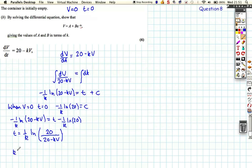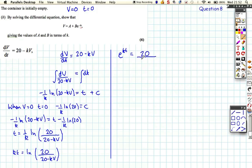So t is equal to 1 over k ln(20 over 20 minus kV). Multiply both sides by k, we get kt is ln(20 over 20 minus kV). So we can now take, if we move back up to the top here, if we take exponential of both sides, we get e to the kt is equal to 20 over 20 minus kV. And then we multiply both sides by the denominator, we get e to the kt times (20 minus kV) is equal to 20.